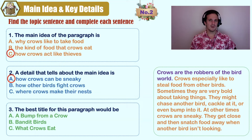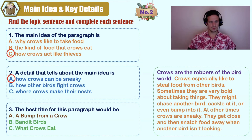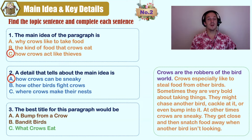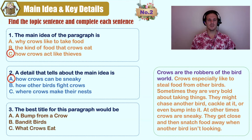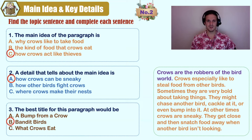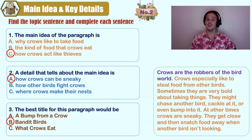What do you think is the best title? A) A bump from a crow, B) Bandit birds, C) What crows eat. There is only one good answer: Bandit birds. 'Bandit' is another word for thief or robber, and the main idea is how crows act like bandits, thieves, or robbers.